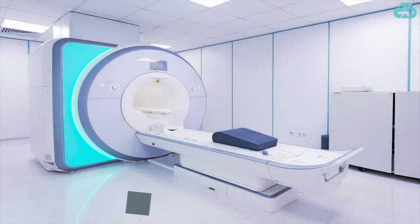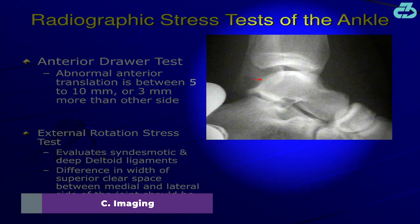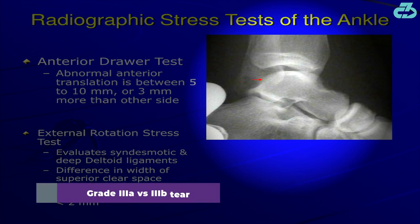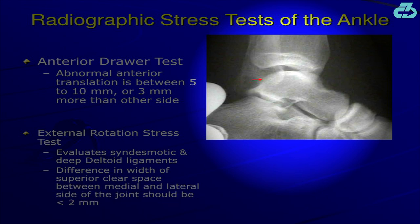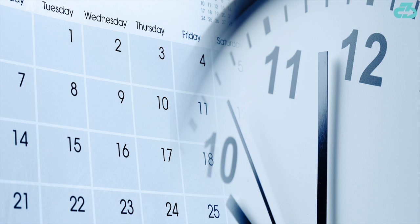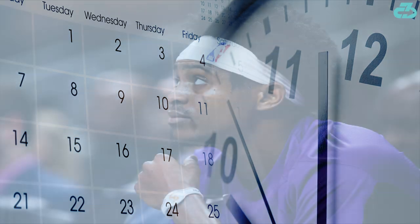Imaging would include an MRI and stress radiograph — an x-ray taken while a member of the medical staff performs the anterior drawer test. If the stress radiograph shows gapping of the ankle mortis less than 3 cm, the injury is termed a grade 3A tear; if greater than 3 cm, it's a grade 3B tear. This distinction matters because research shows a grade 3A, on average, takes 15 days less to return from than a grade 3B. Based on De'Aaron's 3-week post-injury reevaluation date, my educated guess is that he has a 3A tear.